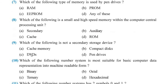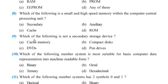Question number 8: Which of the following is a small and high-speed memory within the computer's central processing unit? The answer is cache. Many people mispronounce it — that is an Indian pronunciation; the correct pronunciation is cache.